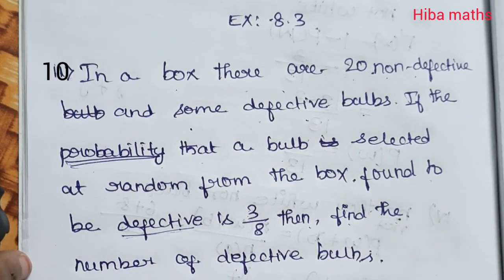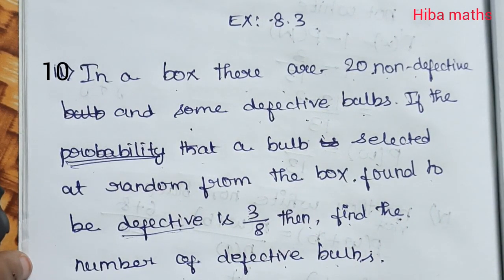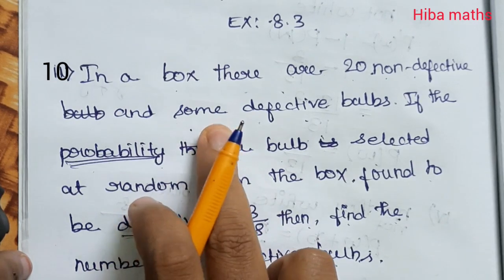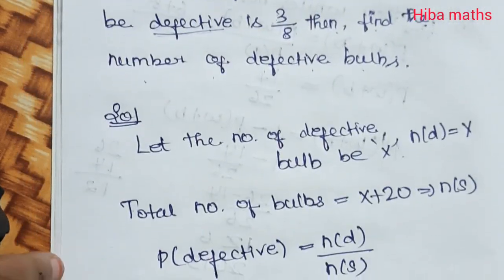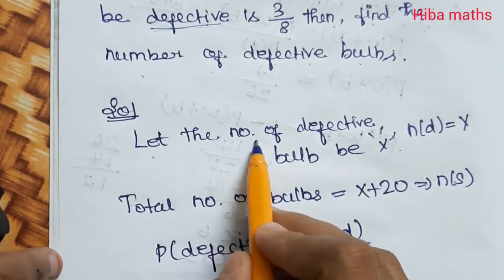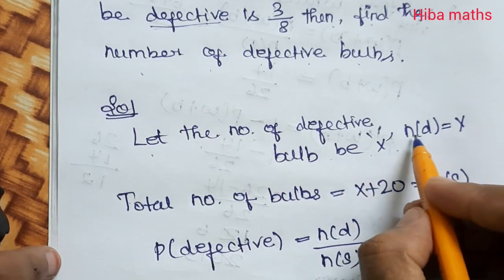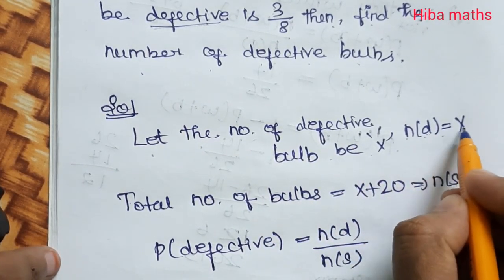Then find the number of defective bulbs. How many defective bulbs are there? In the solution, let the number of defective bulbs be x, so n(d) = x.